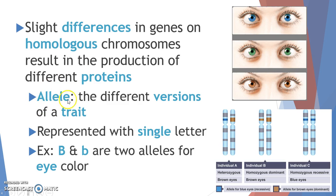Another important vocab word is allele. An allele refers to the different versions of a gene for a trait. In genetics problems, we represent alleles with a single letter specific to the trait we're discussing. For eye color, we might use capital B and lowercase b as the two alleles, since both brown and blue start with the letter B. So capital B and lowercase b represent the two alleles for eye color.